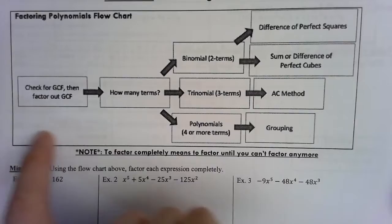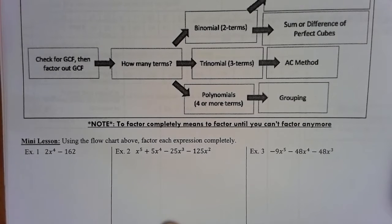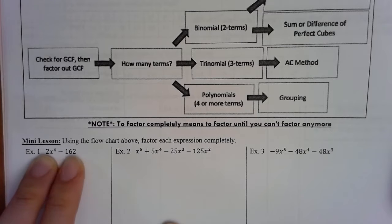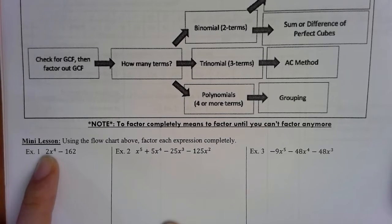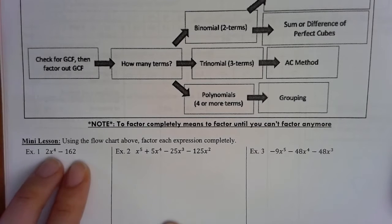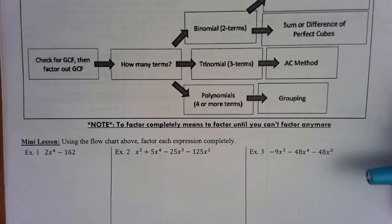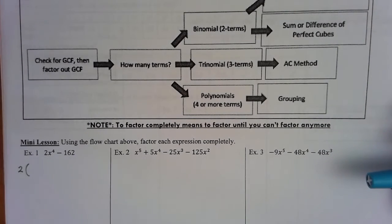Step number one in factoring is always checking for the greatest common factor — what do all the terms share in common? First, look at the numbers: the coefficients and constants. They're both even, and the first term has a 2, so the only number that divides 2 nicely is 2. Both terms are divisible by 2, so 2 is the GCF. Checking the variable: the first term has x to the fourth but the second term has no x, so x is not part of the GCF.